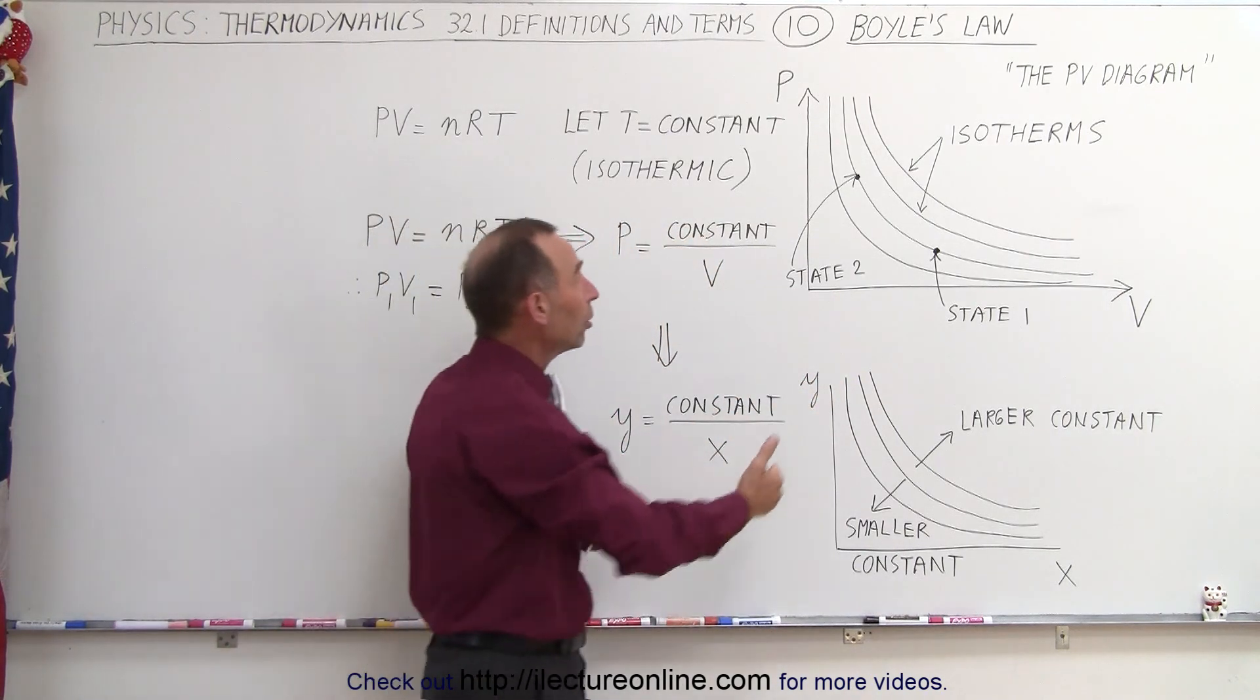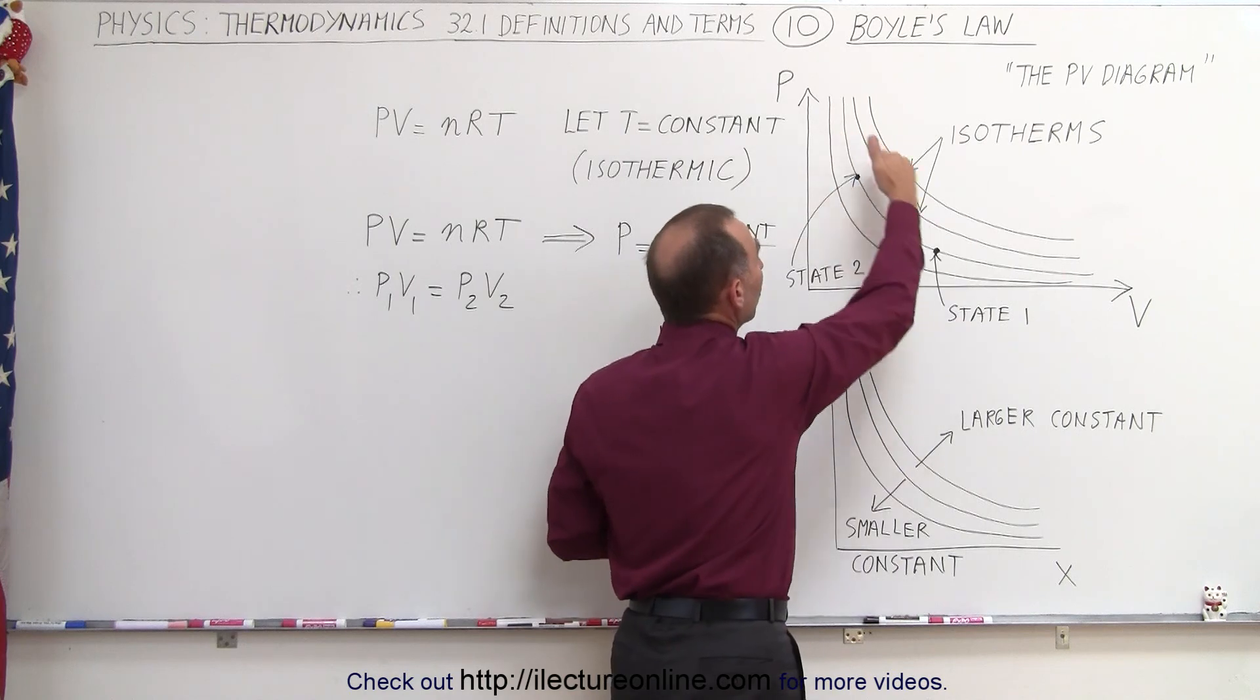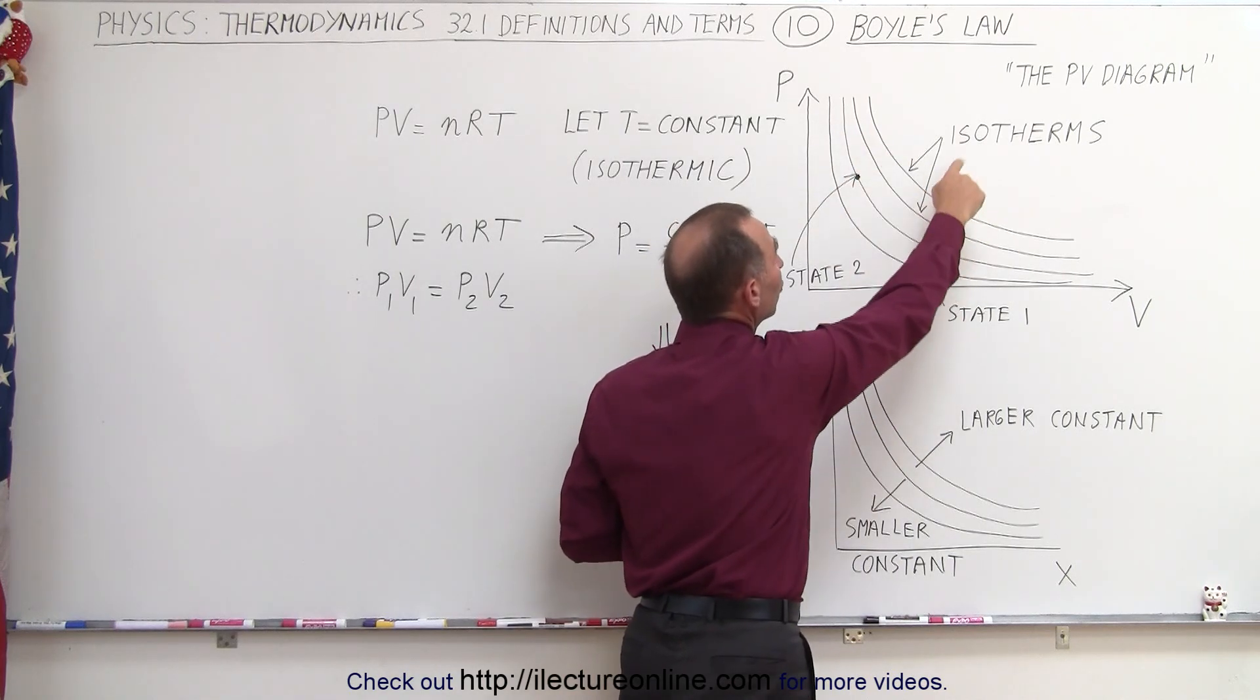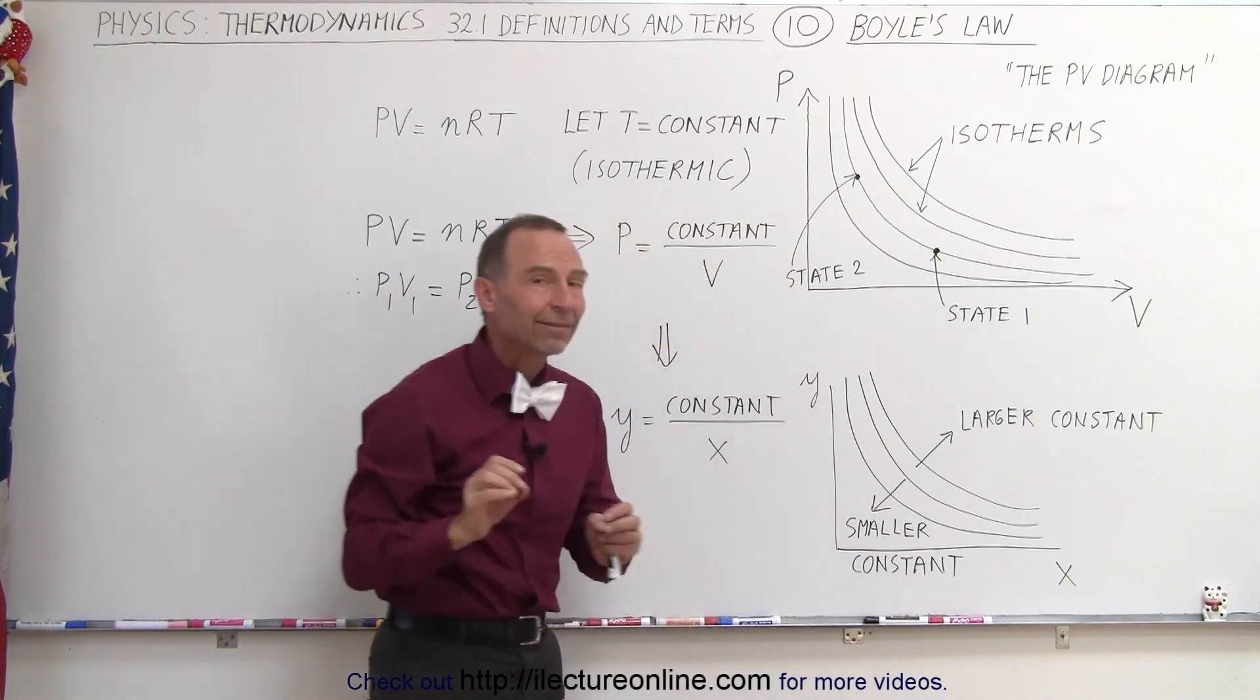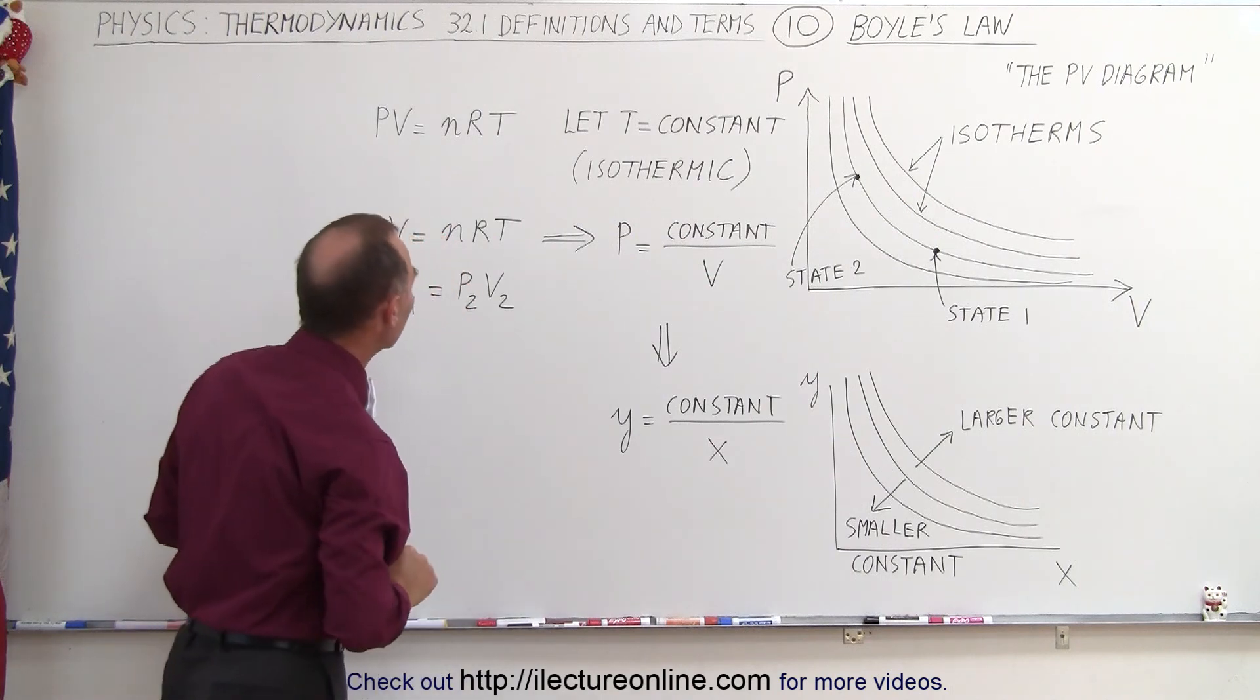But that will be the case along any one of these lines. Well, where did these lines come from? These are called isotherms, lines that represent a constant temperature.